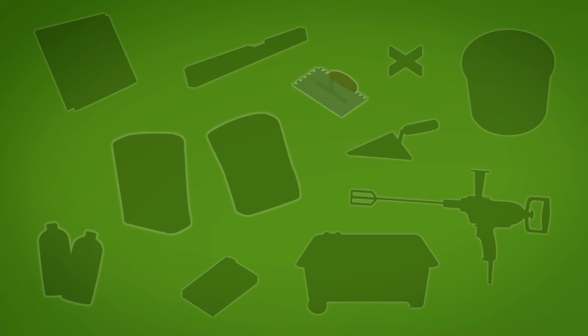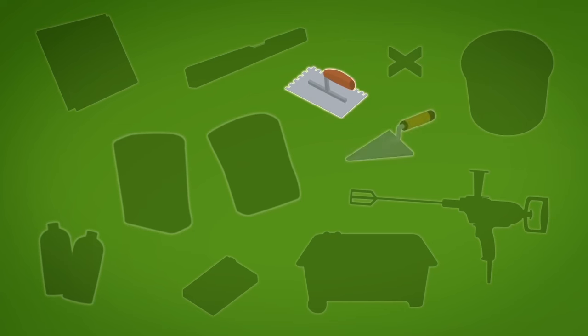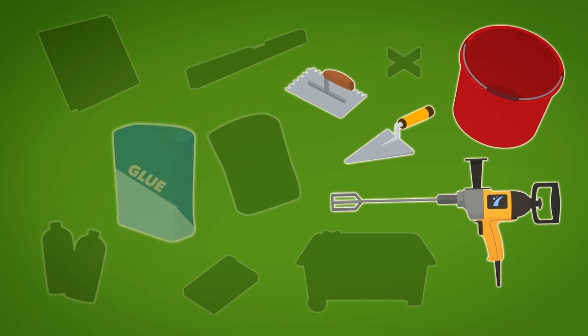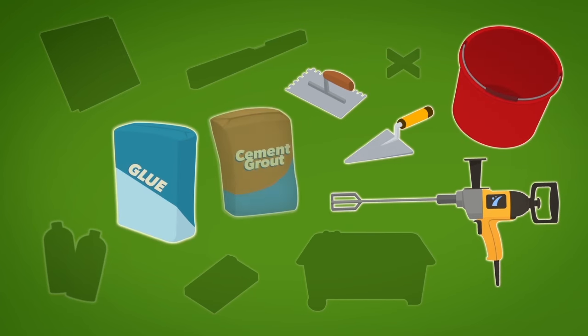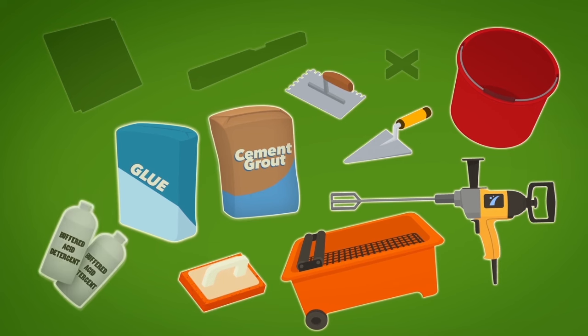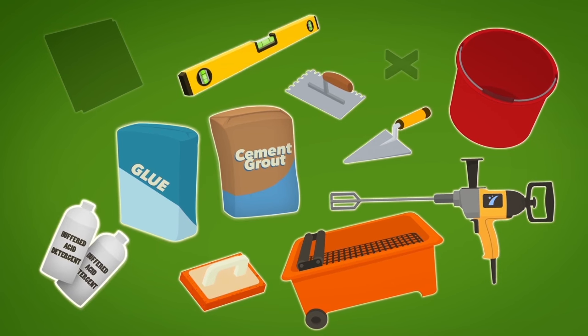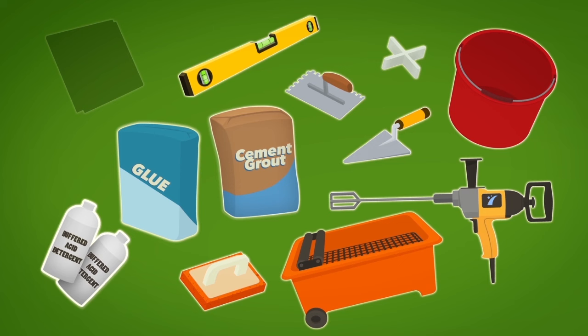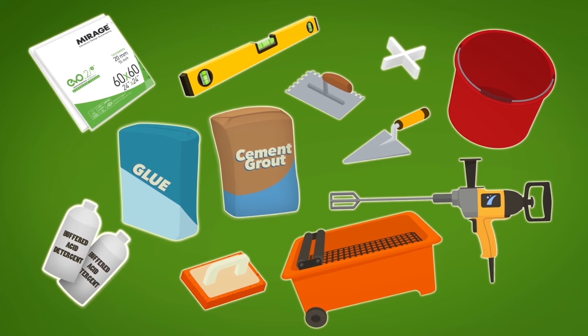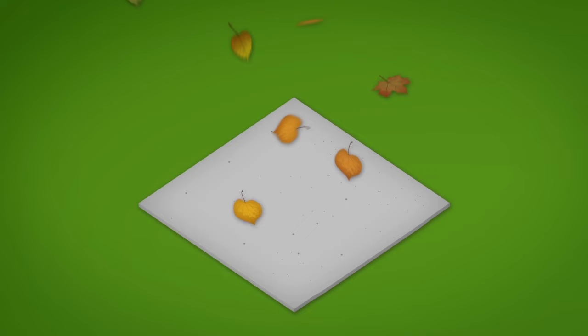you will need a notched spatula, trowel, drill mixer, pail, glue for slabs, cement grout, wash tub, sponge float, buffered acid ingredients, spirit level, 3mm spacers, and of course, Mirage Evo 2e porcelain stoneware.